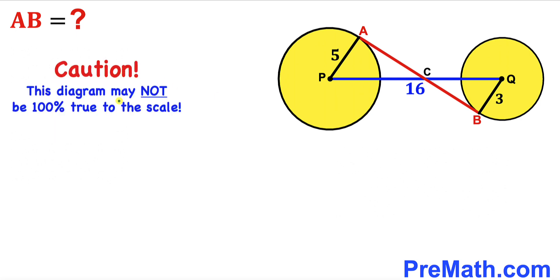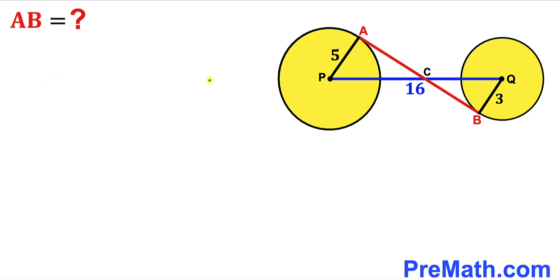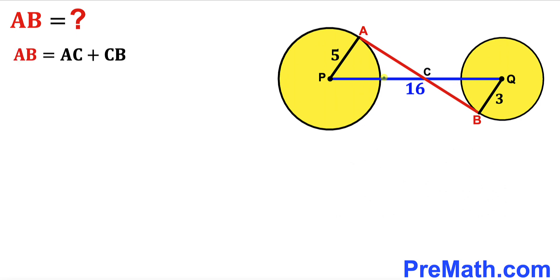Please keep in mind that this figure may not be 100% true to scale. We can see that the blue and red lines intersect at point C. Since we are finding AB, we note that AB equals the sum of two segments: AC and CB. We label segment AC as X units and segment CB as Y units. Our task is to find the values of X and Y.